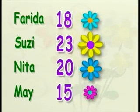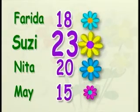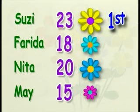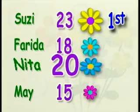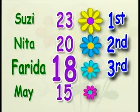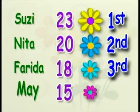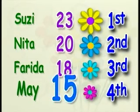Faridah and her friends took part in a competition to collect flowers from a garden. The diagram shows the number of flowers each of them collected. Who was first, second, third, and fourth? Susie collected the most flowers — 23 — so she was first. Nita was next with 20 flowers, putting her in second place. Third would be Faridah because she collected 18 flowers. That leaves Mei in fourth place because she collected only 15 flowers.